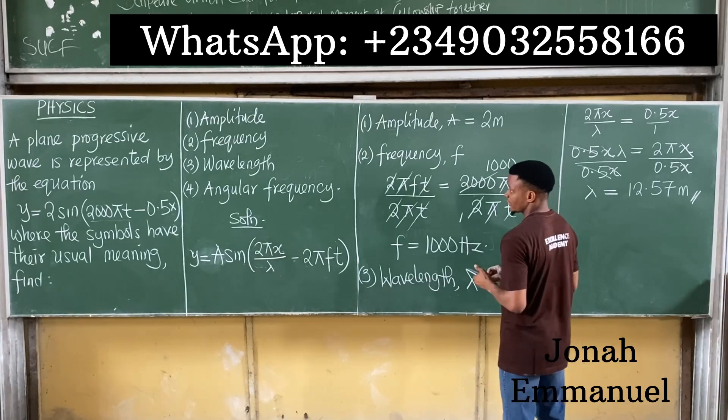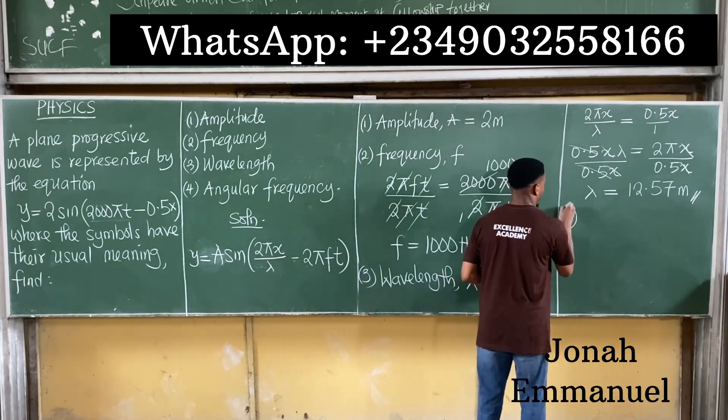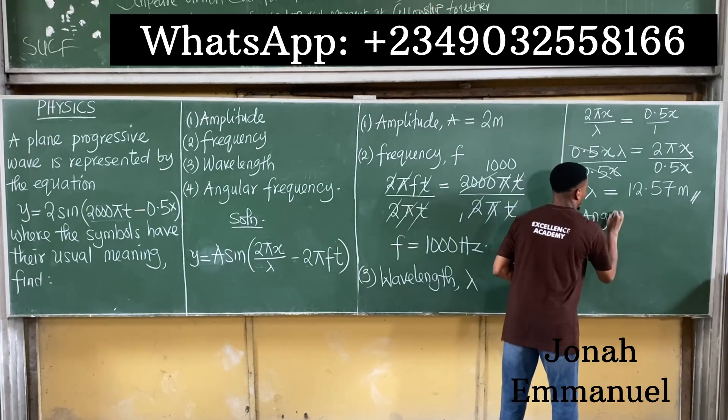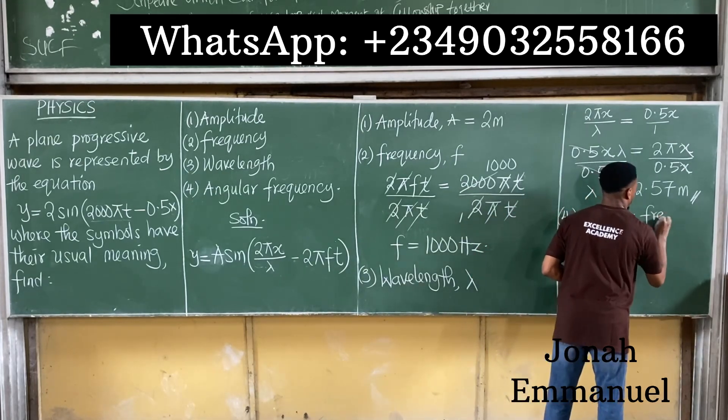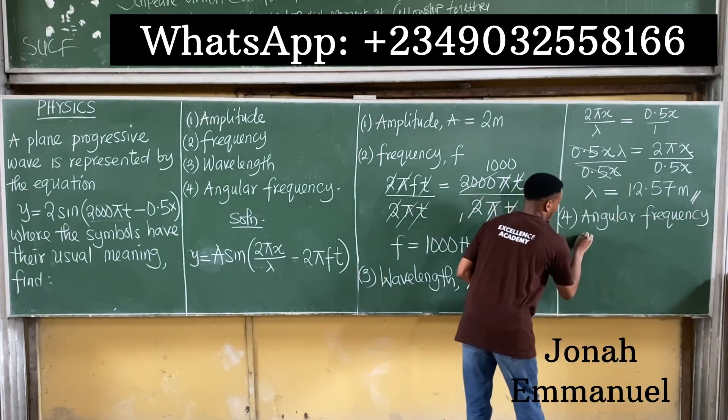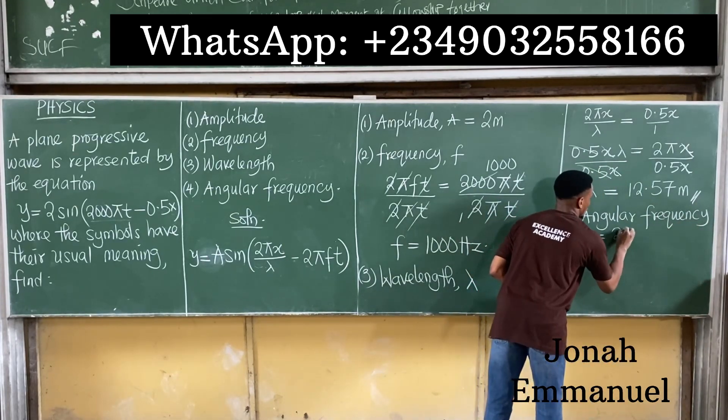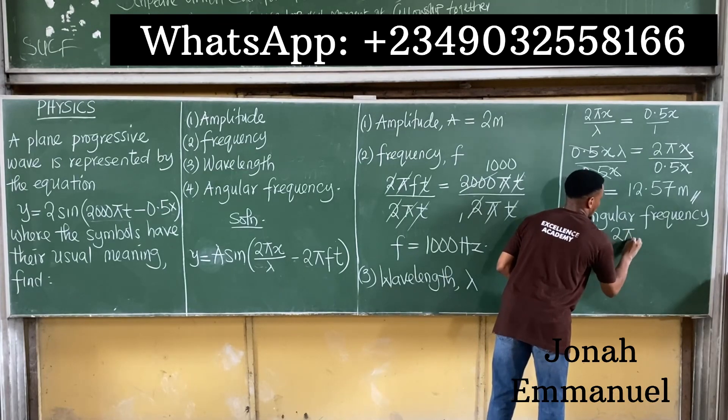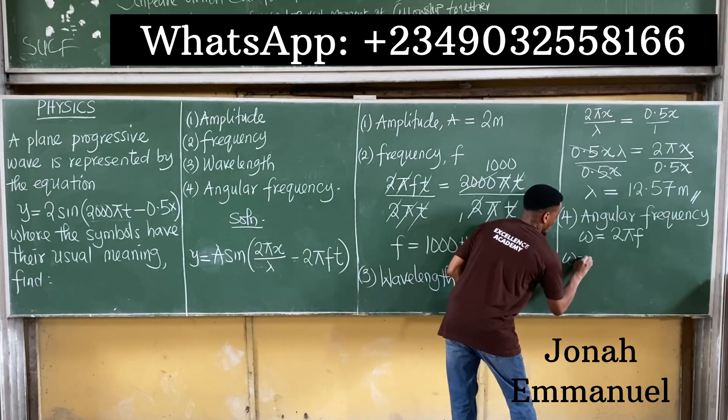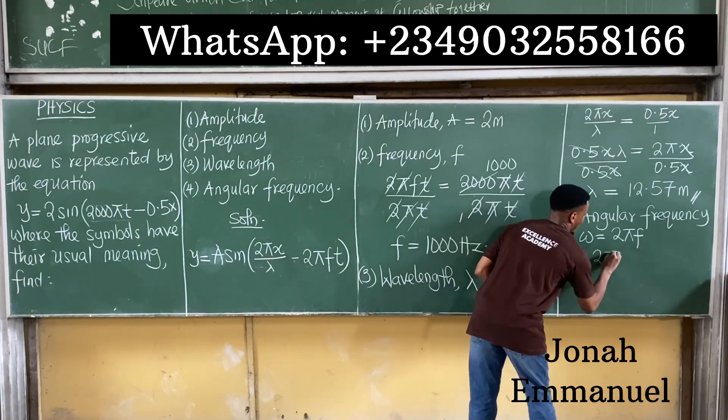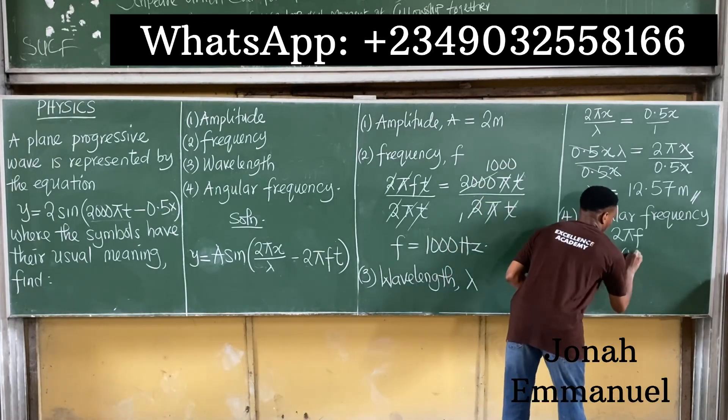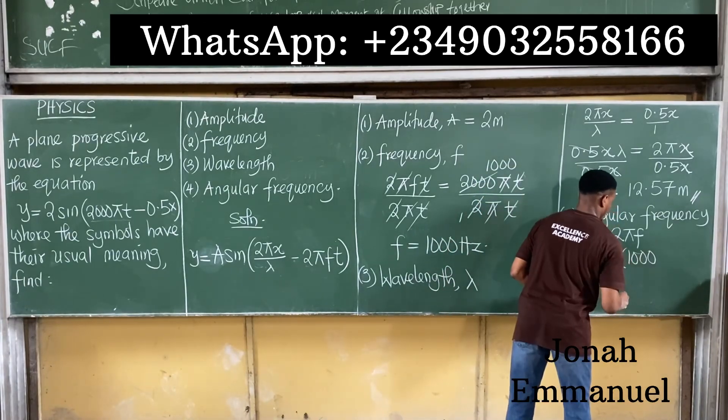Finally, let's get number 4. Number 4, we have to find angular frequency. Now note that angular frequency is ω and ω = 2πf. So if I input values, ω will be equal to 2 times π times the value of f. We said f is what? A thousand. I'm having a thousand hertz.